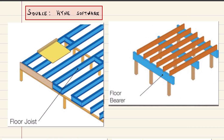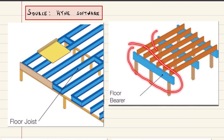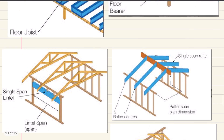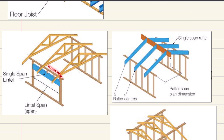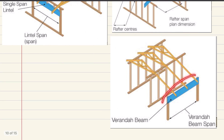Before we get started with the design I'll quickly show you the structural elements that we're going to design together. We're going to size floor joists, which are horizontal members used in framing to span in between bearers or walls and support the floor and walls above. A floor bearer supports the joists and is attached to the columns. Lintels are a type of beam that spans openings such as doors and windows. A rafter is a sloped beam used to carry the roof loads, and a veranda beam is a roof beam that picks up the rafters in a deck.